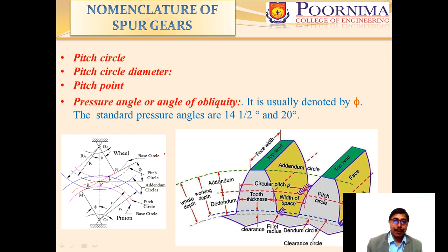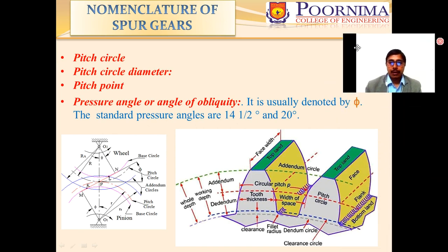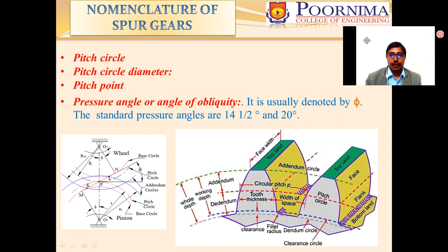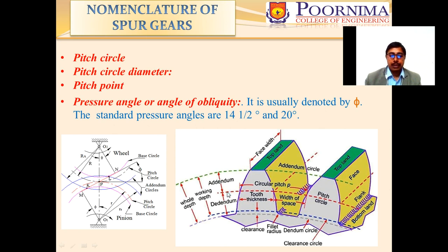The pitch circle diameter is the diameter of the pitch circle. The size of the gear is usually specified by the pitch circle diameter. The pitch point is the common point of contact between the two pitch circles.